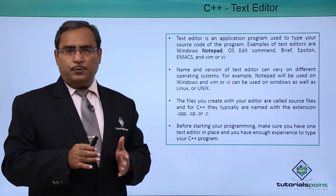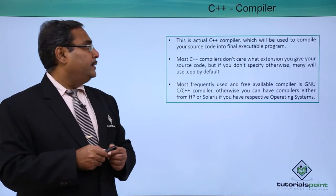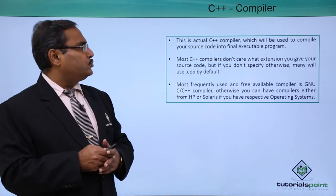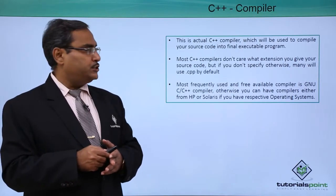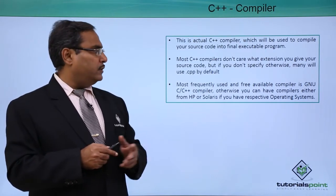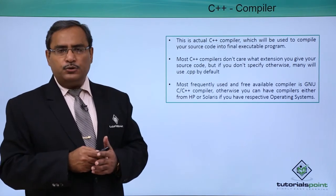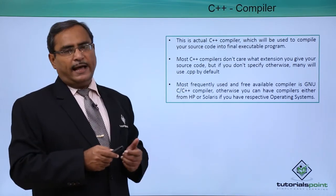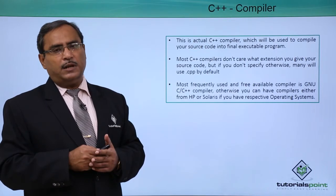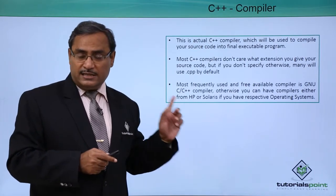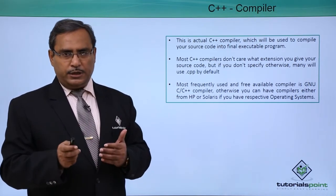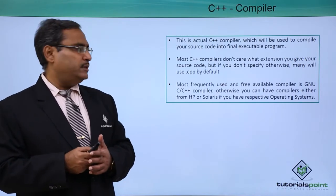The text editor is where you type your program, and the compiler translates your written code. The C++ compiler compiles your source code into the final executable version. Most C++ compilers do not care what extension you give to your source code, but if you do not specify otherwise, many will use .cpp by default. A frequently used and freely available compiler is the GNU C and C++ compiler, which we have used in our tutorial, executed both in Dev C++ and the GNU compiler.